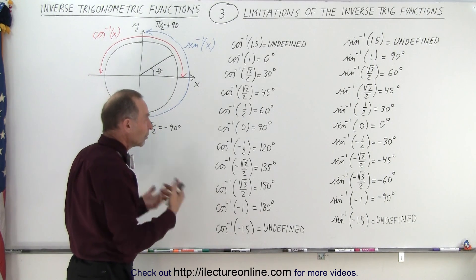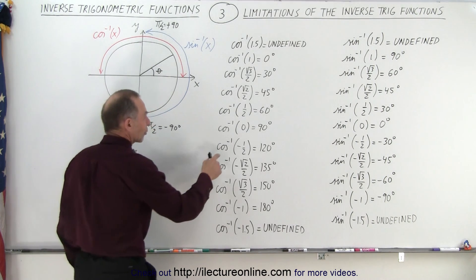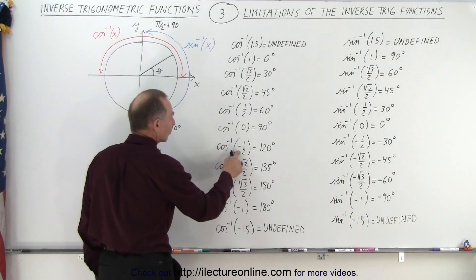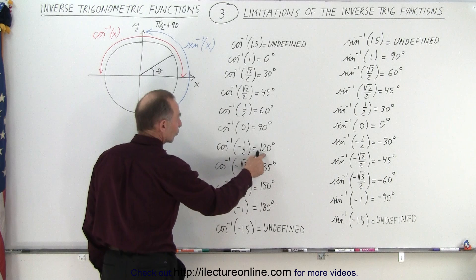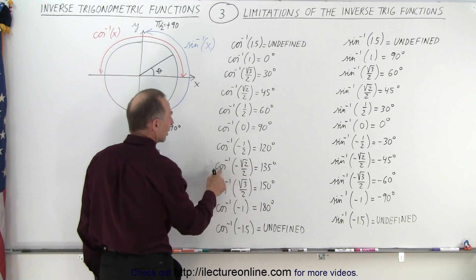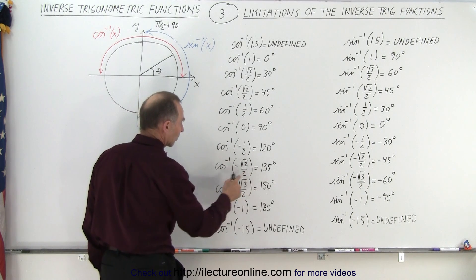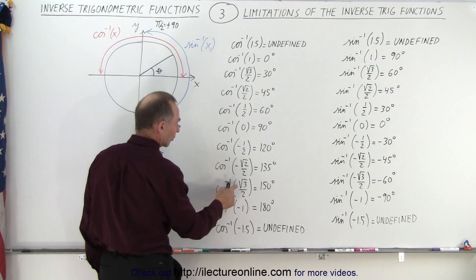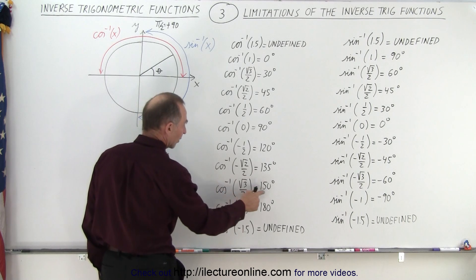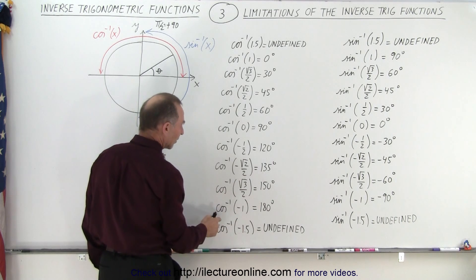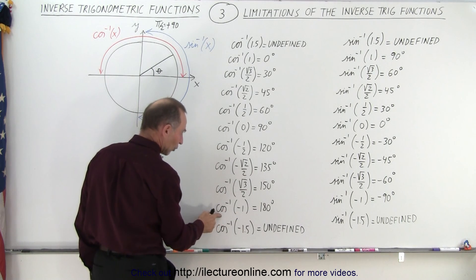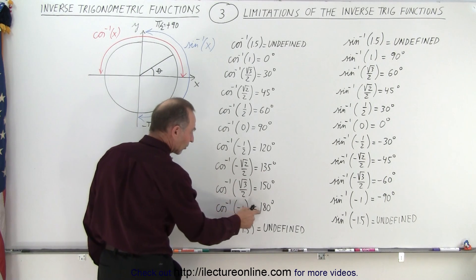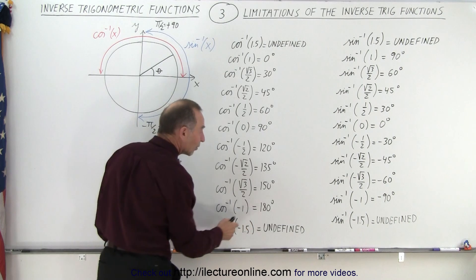Notice that when we continue, the inverse cosine of negative 1 half is 120 degrees. The inverse cosine of negative square root of 2 over 2 is 135 degrees. The inverse cosine of negative square root of 3 over 2 is 150 degrees. And the inverse cosine of negative 1 is 180 degrees.